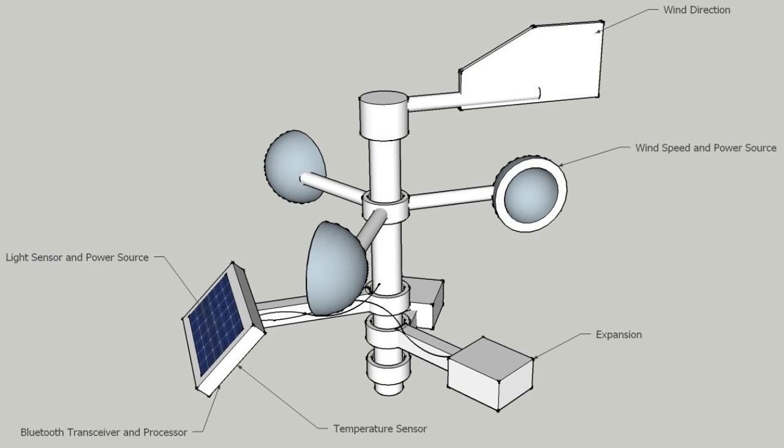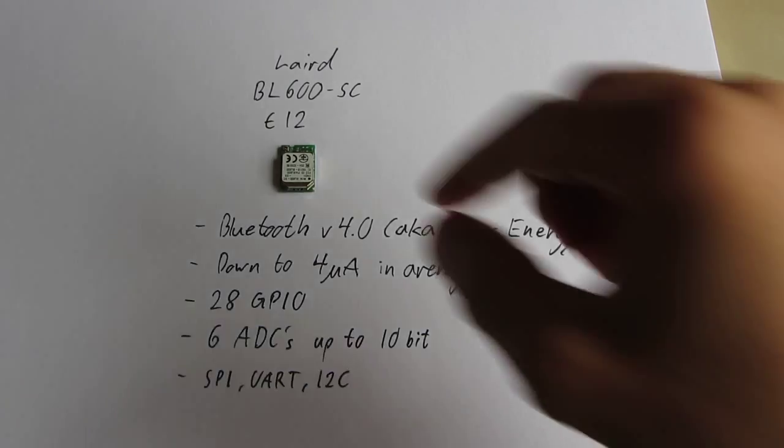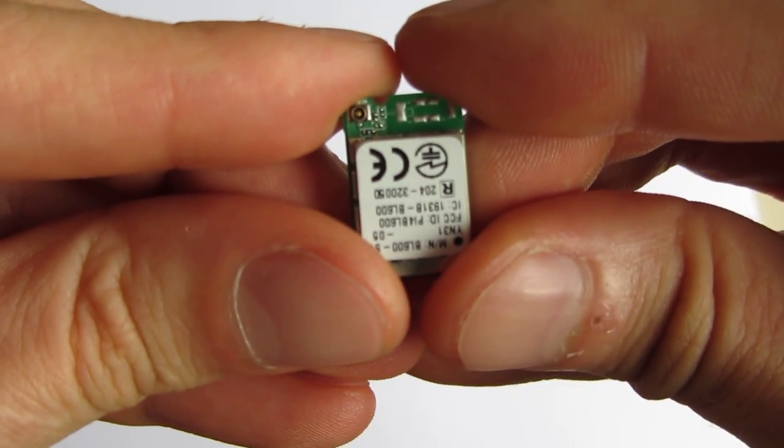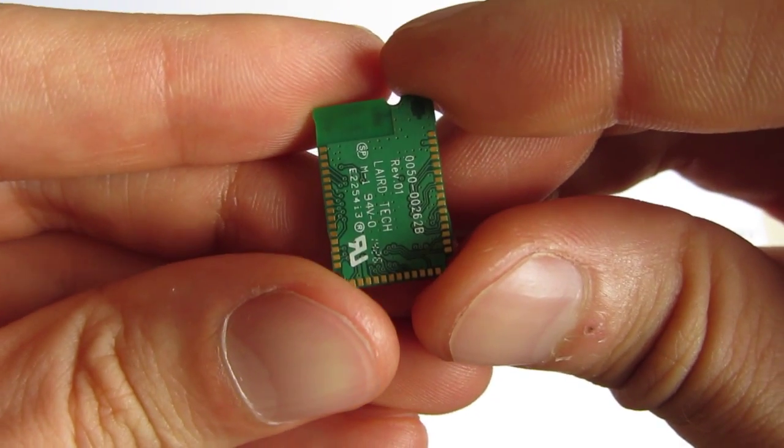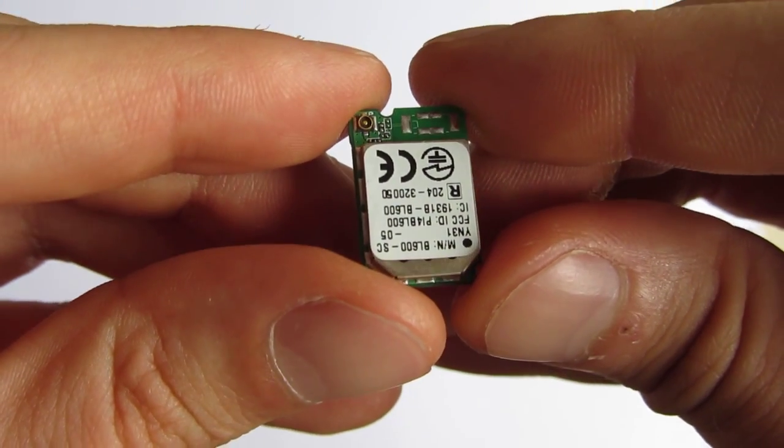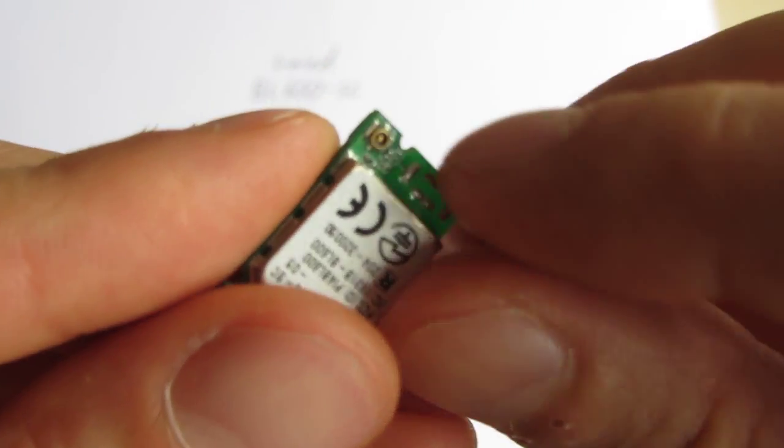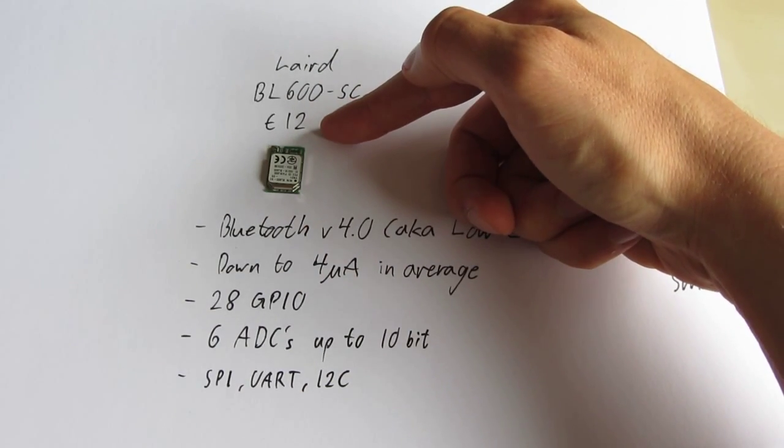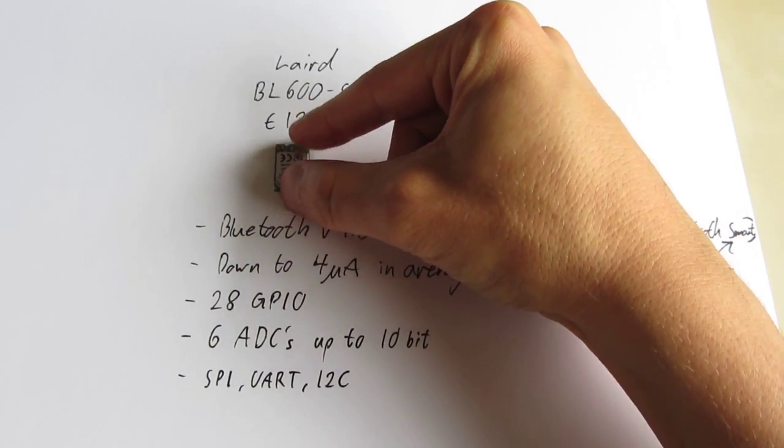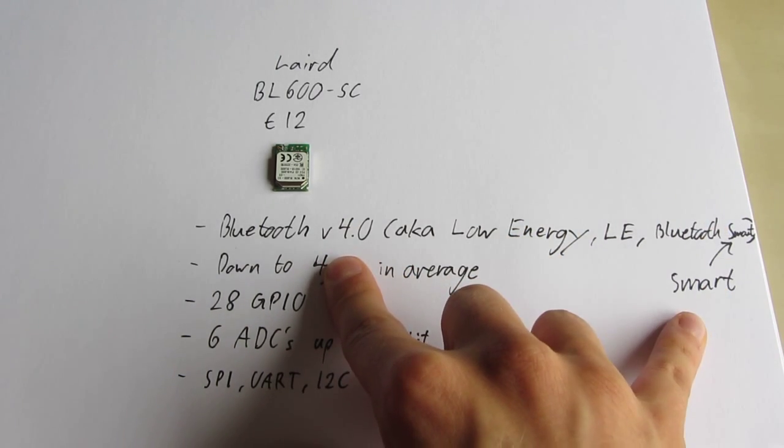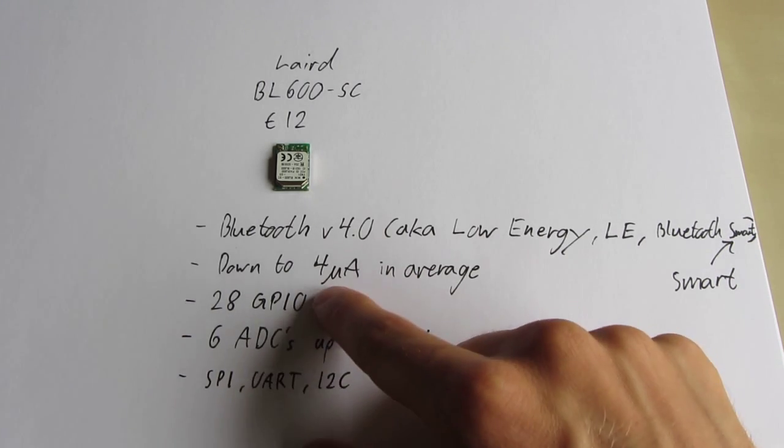Next, some technical details. The heart of the weather station is this little device, a Leard BL600. It is a Bluetooth transceiver, Bluetooth 4, but also it has a processor and a bunch of inputs and outputs. And here you can see connection to an external antenna if you want that. It's quite cheap, 12 euros last time I checked. It's very small. It has Bluetooth V4, so this is the low energy type, also called Bluetooth Smart, and that allows you to be very low in power consumption.